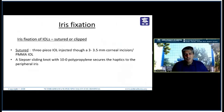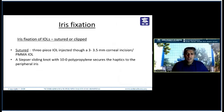The next technique available is iris fixation. Iris fixation of IOLs can either be sutured fixation or a clipped lens. For suture fixation, you can suture-fixate either a three-piece IOL injected through a 3 to 3.5 mm corneal incision, or you can also suture-fixate a PMMA lens. A CPSA sliding knot with either 9-0 or 10-0 prolene is used to secure the haptics to the peripheral or mid-peripheral iris. Single-piece lenses are not ideal for suturing because they have very sharp edges at the haptic and can cause iris chafing, persistent uveitis, and pigment dispersion.